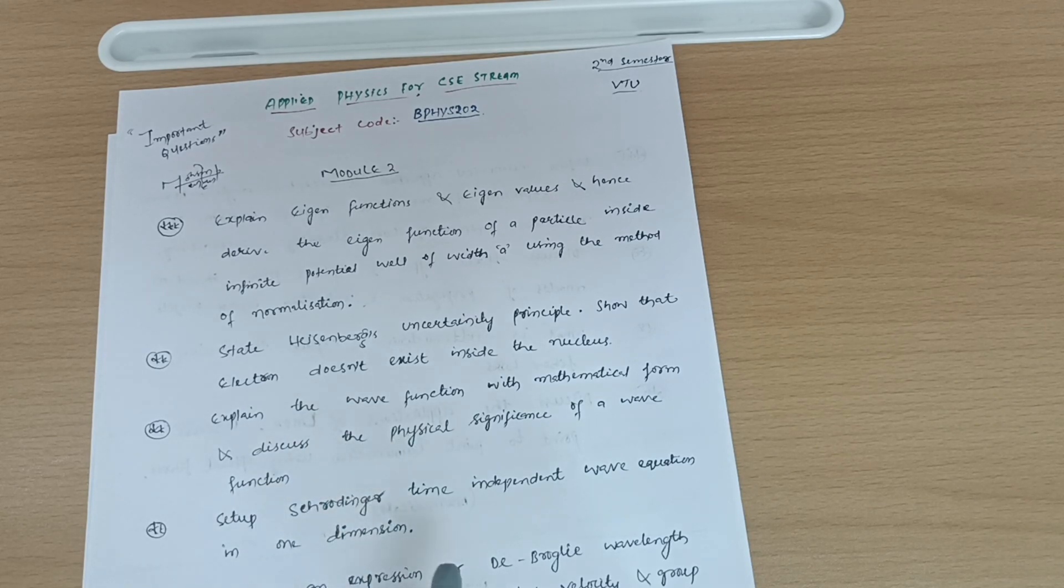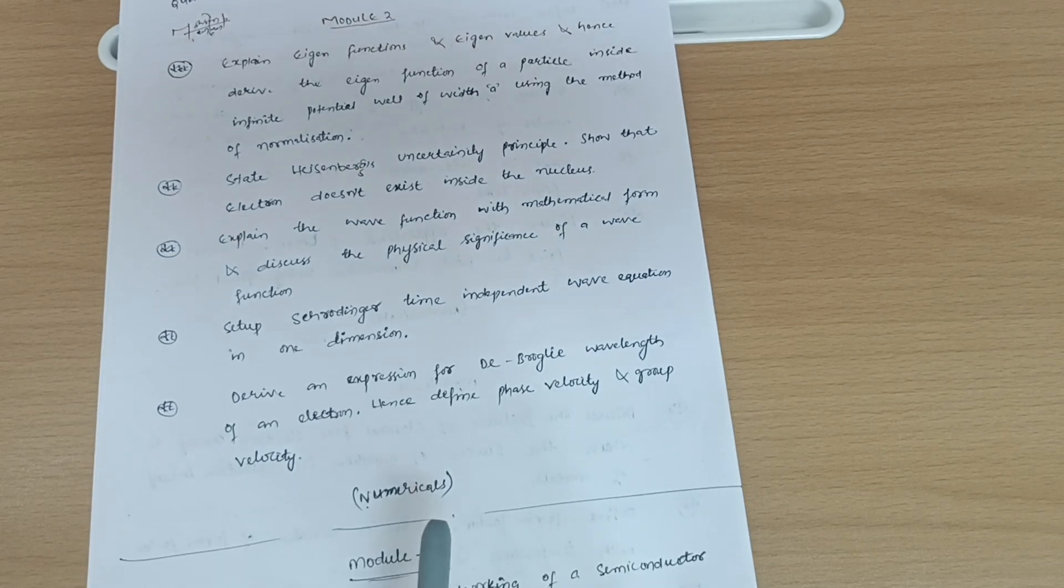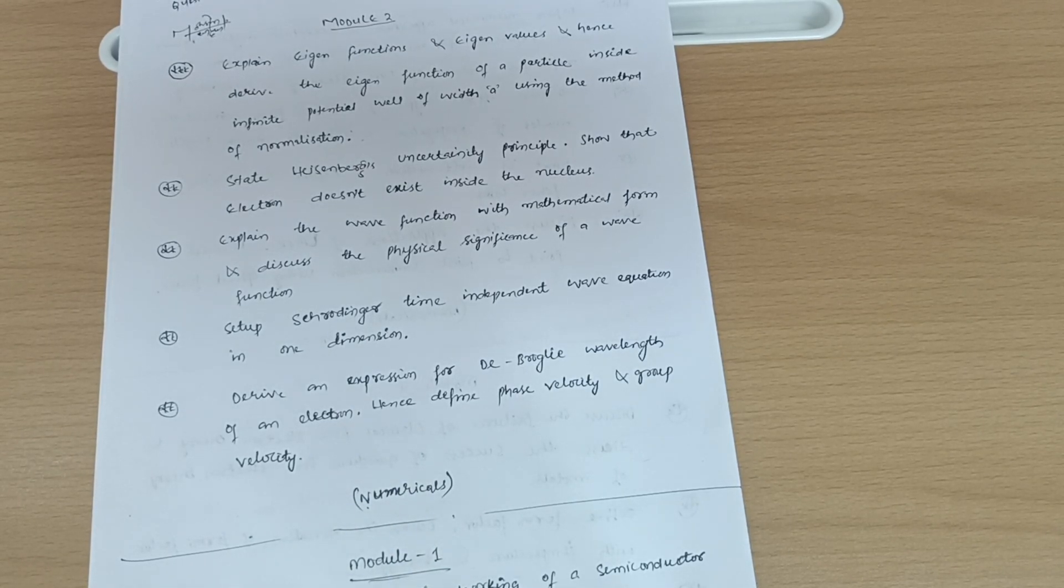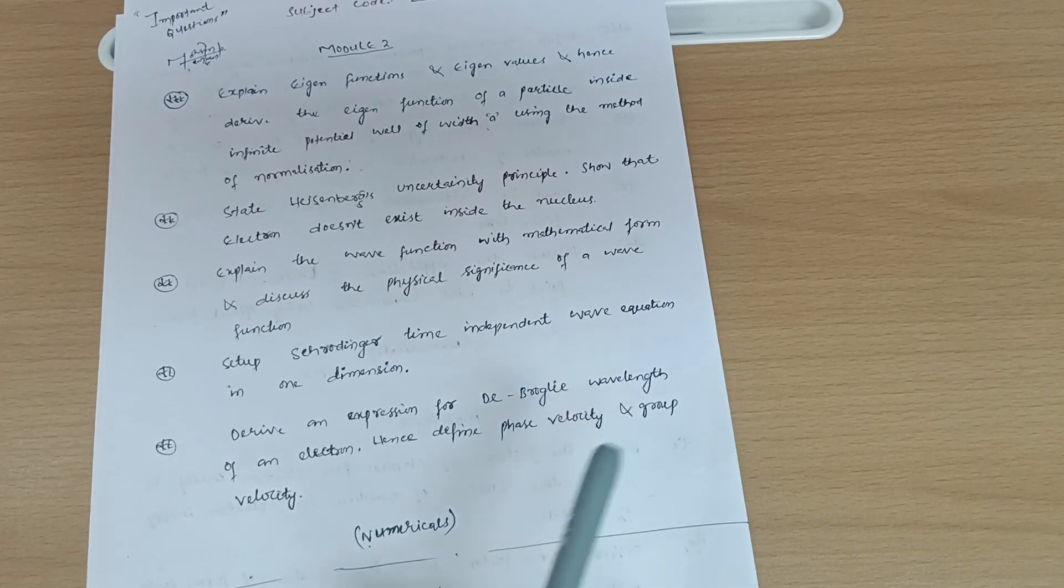If you want to score 20 marks in module second, then definitely you should go through the numerical part, which are very simpler ones. My suggestion to you people is go through numericals also. Don't leave any numerical. These are very simpler ones. This is not like PU physics. It is engineering physics, which is easier than PU physics.